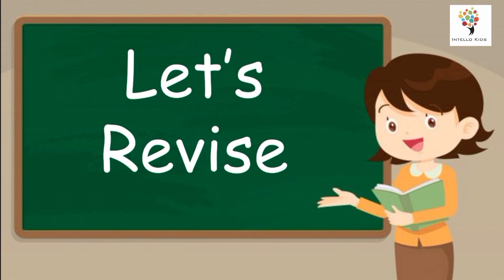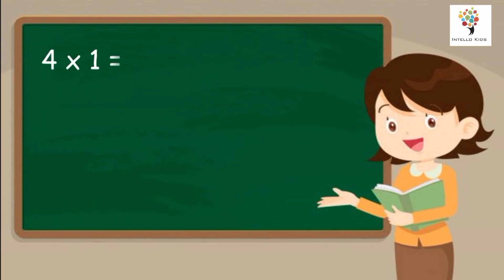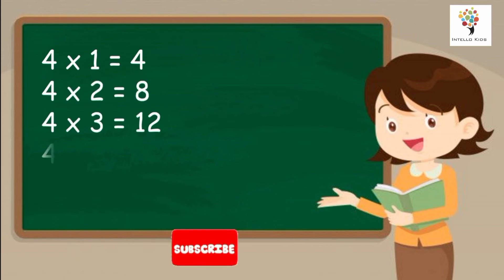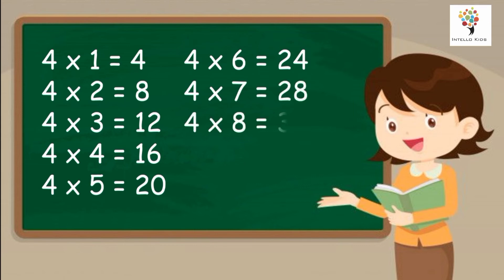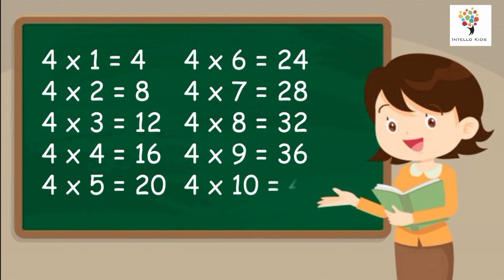Let's revise. Four ones are four. Four twos are eight. Four threes are twelve. Four fours are sixteen. Four fives are twenty. Four sixes are twenty-four. Four sevens are twenty-eight. Four eights are thirty-two. Four nines are thirty-six. Four tens are forty.